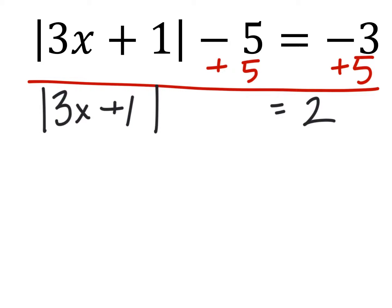Well, since this is the absolute value, it's going to give us two equations. That means we're going to have two solutions from this. So rewriting those two equations would give us 3x plus 1 equals 2 and 3x plus 1 equals negative 2.